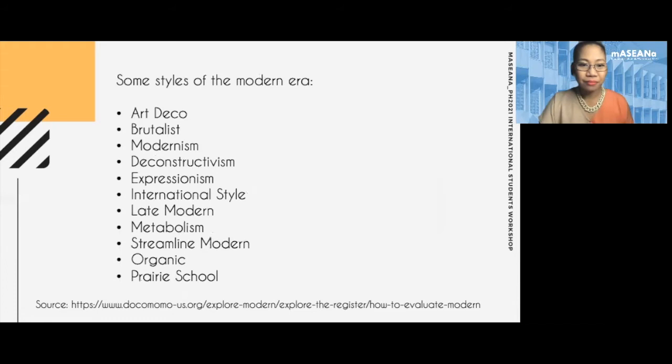Here are some styles that encapsulate architecture of the modern era: art deco, brutalist, modernism, deconstructivism, late modern, metabolism, organic, and prairie school, among others.